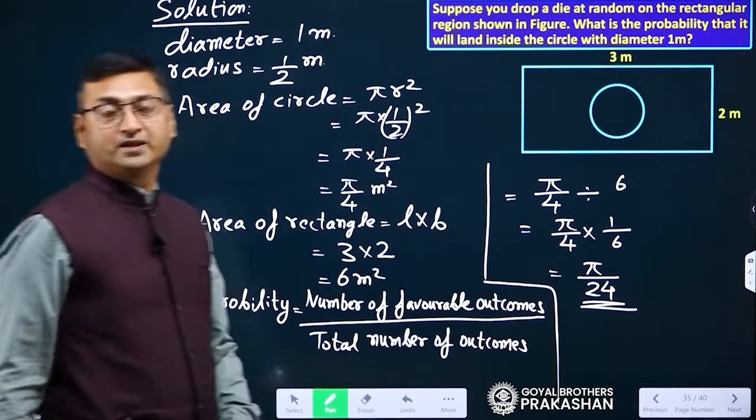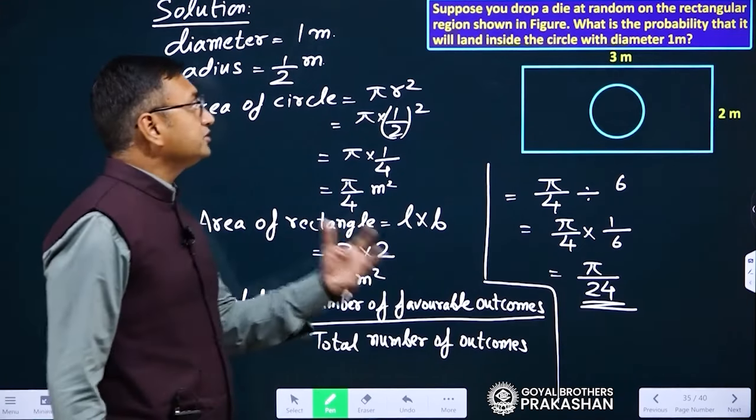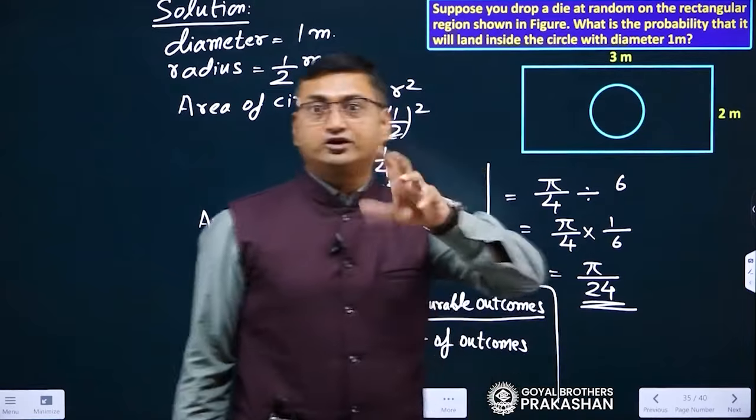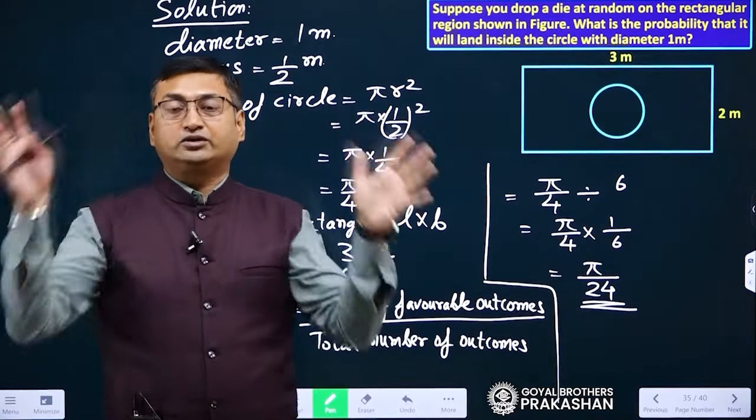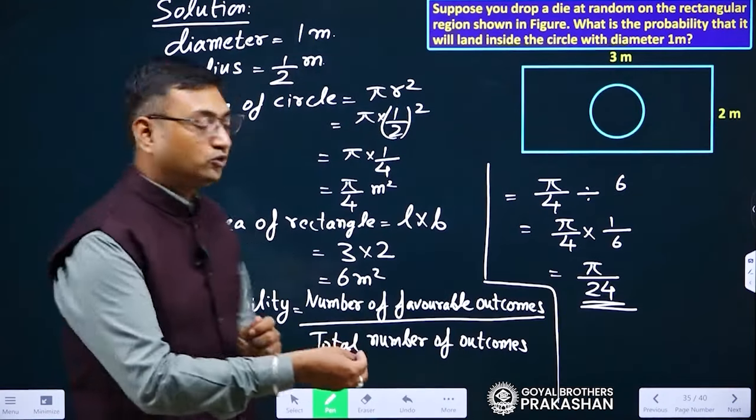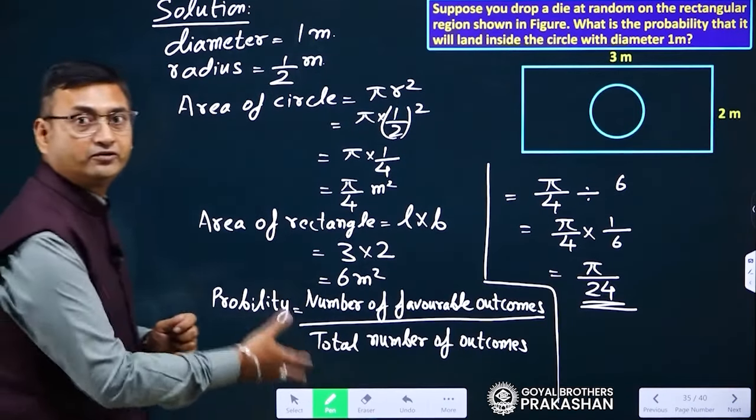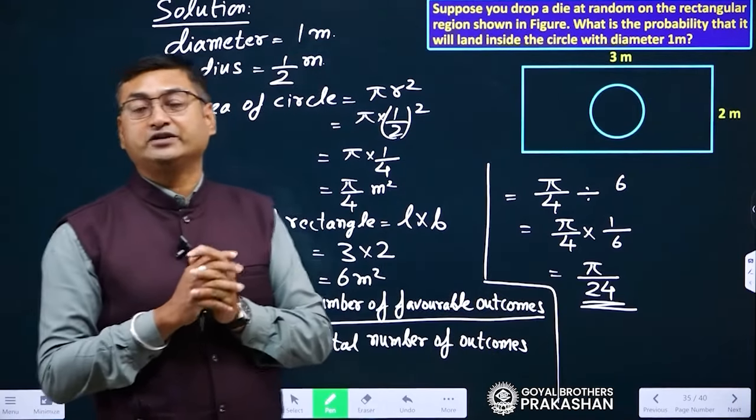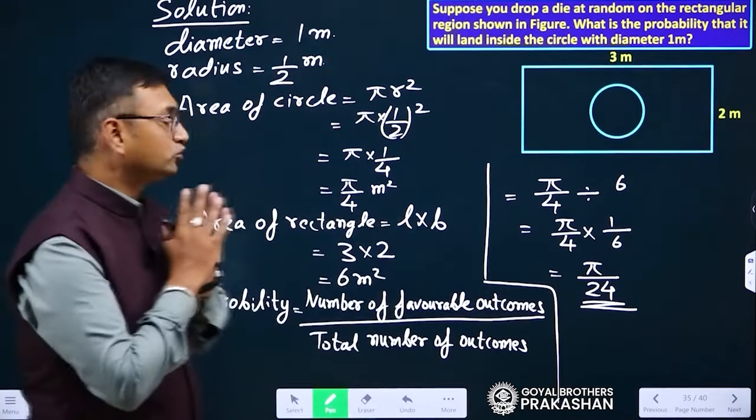Is it clear to all of you? What we have done - they are asking that die should land inside the circle, so we have found out the area of circle and the total area of rectangle. We have put the value of area of circle divided by area of rectangle and we got the answer is pi by 24. I hope everyone is clear with this part. Please take the note of this part.